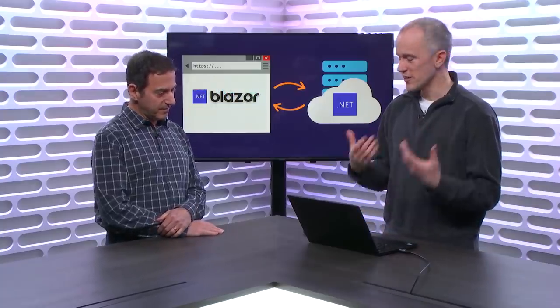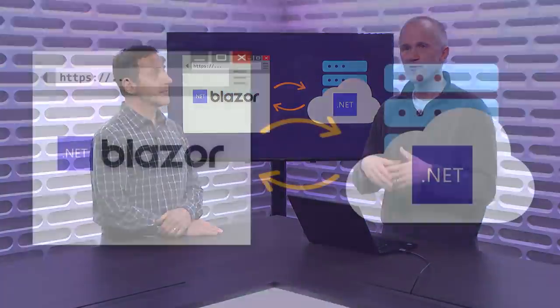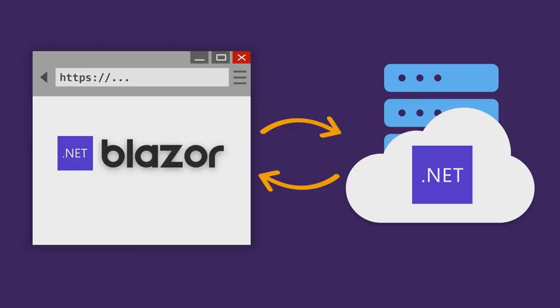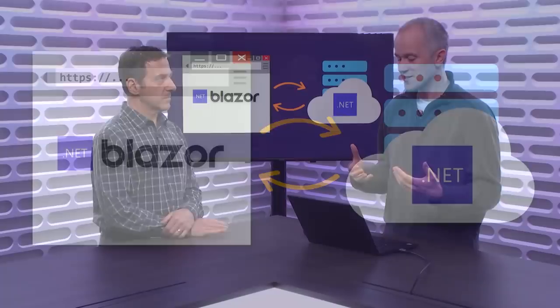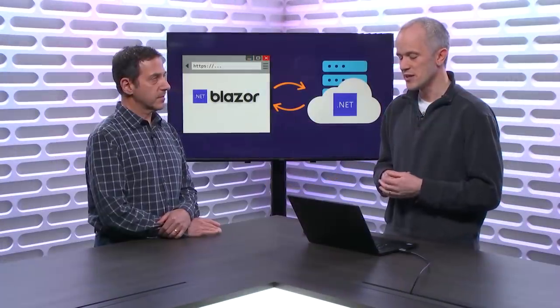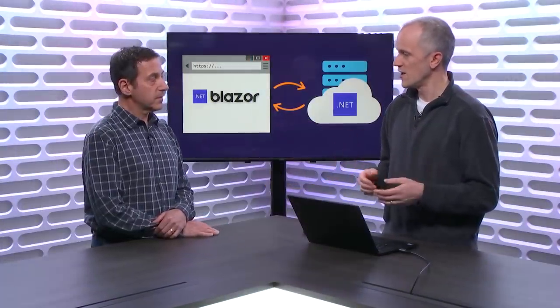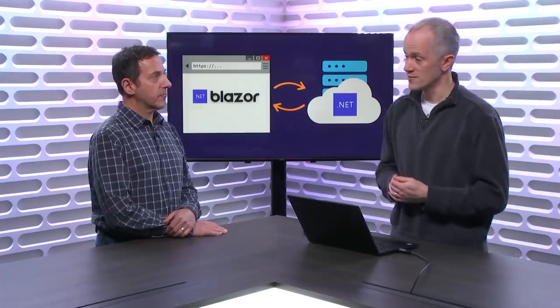That's what Blazor is really all about — enabling full-stack web development with .NET, where you can use C#, .NET, and Visual Studio on both sides of the wire. We think this probably has a lot to appeal to even people who are new to .NET. You get to leverage the great tooling in Visual Studio, and a very stable set of build tools, libraries, and languages from the .NET ecosystem.